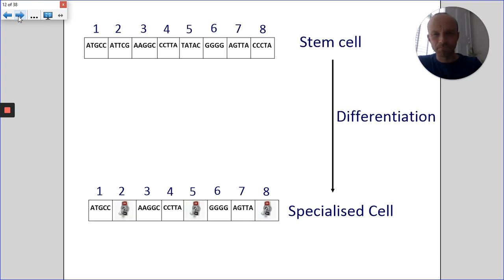Well, if you take a look at the diagram, at the top, we've got our stem cell, our unspecialized cell, and it's got its eight genes. And at the bottom, we've got our specialized cell, but three of the eight genes are switched off.